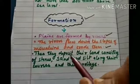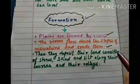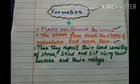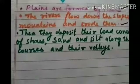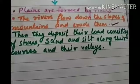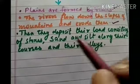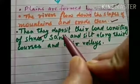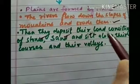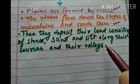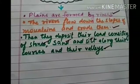Rivers deposit the load consisting of stones, sand, and silt along their courses and the valleys, and this is how plains are formed.